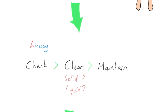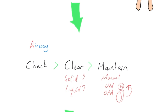Whether it's a solid obstruction or liquid will guide whether we're scooping or pincering it out, or using postural drainage or suction to manage it. Once we've checked and cleared it, we're going to maintain the airway. That could be manual maneuvers such as head tilt chin lift or jaw thrust, or at this stage you might want to use nasopharyngeal airways (NPAs) or oropharyngeal airways (OPAs) - devices you insert into the nose or mouth to help secure the airway.